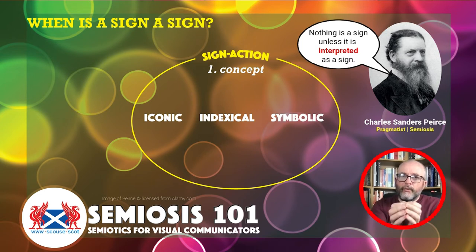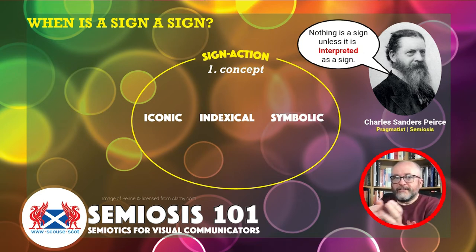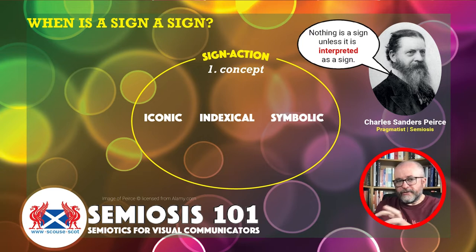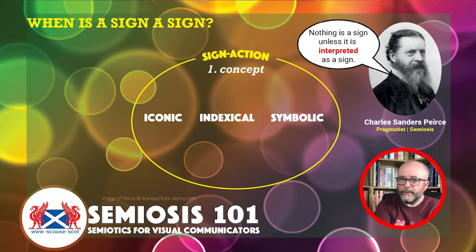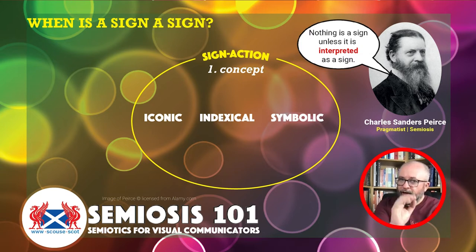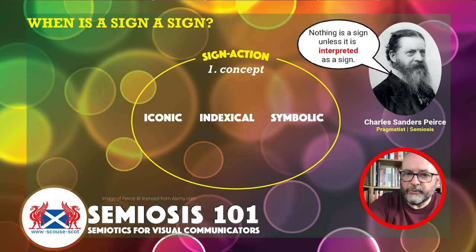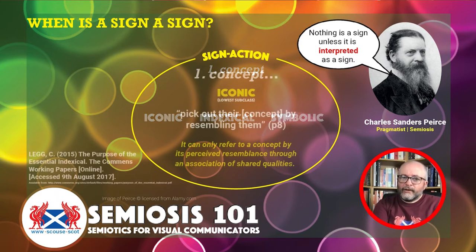We're focusing on one of those three triadic elements: how do we represent the concept? Peirce calls it the icon, the index, and the symbol. The word 'iconic' has different connotations in everyday use, but within the framework of Peircian theory, we use it purely within semiosis. Just bracket any other meaning of the word — in semiosis it means something particular, and it helps the target audience interpret the concept.